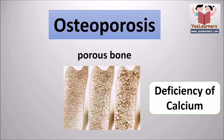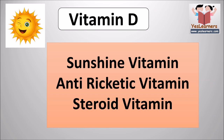Osteoporosis is a disease that affects bones due to the deficiency of calcium. Vitamin D is absent in vegetables and is produced in the human body by the action of ultraviolet rays. Vitamin D is known as sunshine vitamin, anti-rachitic vitamin, and steroid vitamin.